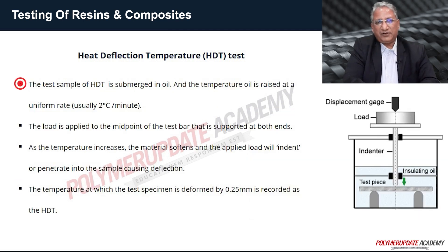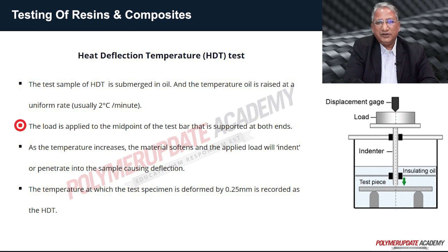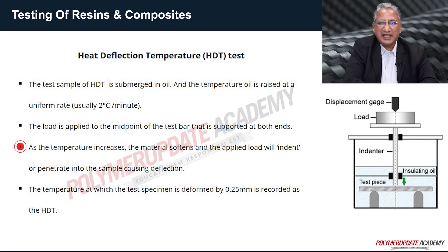The test sample for HDT is molded to a specific thickness and width, then submerged in oil. The temperature of the oil is raised at a uniform rate, usually 2 degrees centigrade per minute. A load is applied to the midpoint of the test bar supported at both ends. As the temperature increases, the material softens and the applied load causes deflection. The temperature at which the test specimen is deformed by 0.25 mm is recorded as the HDT. HDT indicates the mechanical stability of a structure at temperature, and the temperature limit above which the material cannot be used for structural applications.